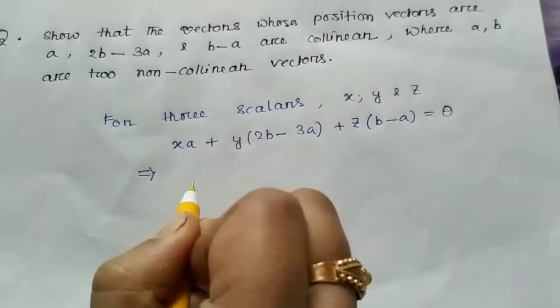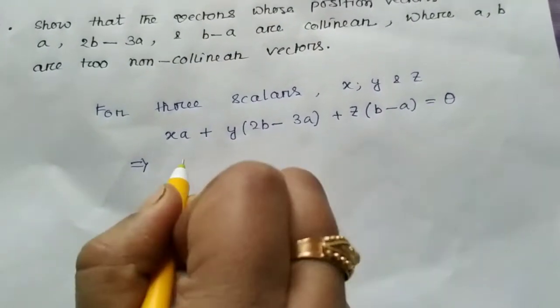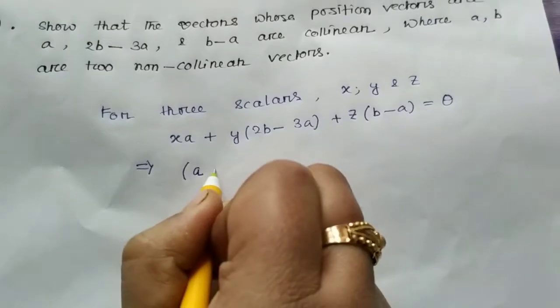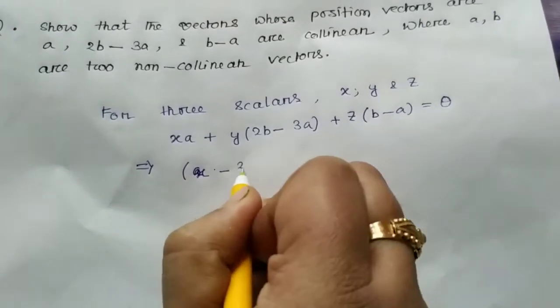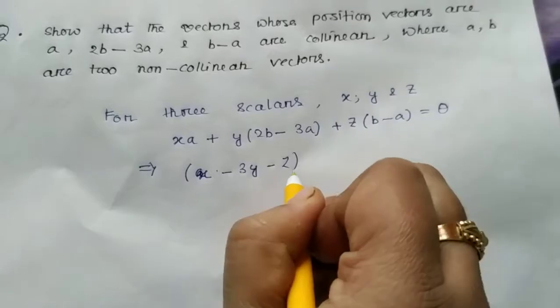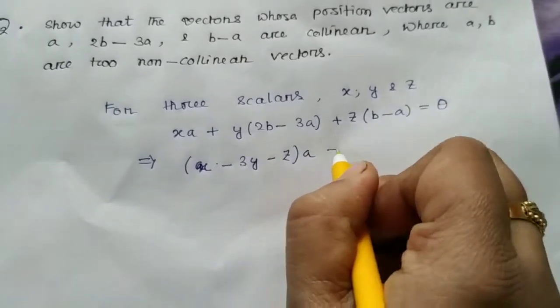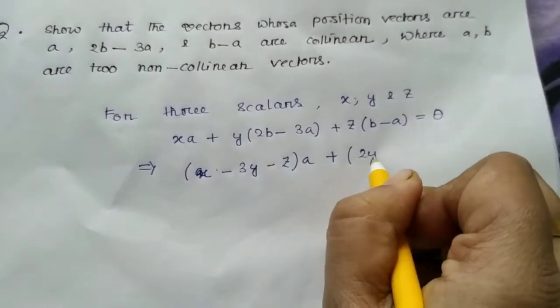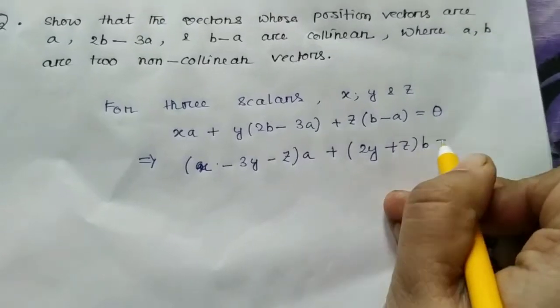We rewrite the equation as x minus 3y minus z into a plus 2y plus z into b equal to theta.